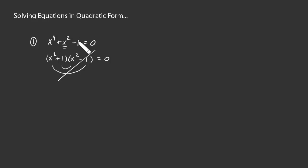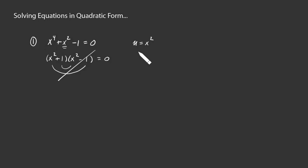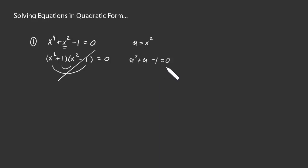Notice how similar this looks to a quadratic: we have three terms — a constant term, something multiplied by one, and then the square of that something. If we let u be that something — the expression that got squared — and make replacements throughout the equation, turning all our x's into u's, we get u squared plus u minus 1 equals 0. Written this way, it's very easy to see we have a quadratic, which is called quadratic form.